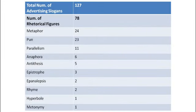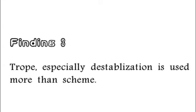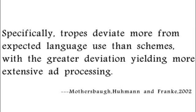Looking at the general data overall and combining with the rhetorical figure classification framework, we can find that generally trope is used more than scheme. In the trope branch, destabilization — especially metaphor and pun — are the most popular rhetorical figures for ad slogans. In the scheme branch, repetition is also popular but not used as much as destabilization. Tropes being more used than schemes is also discussed in former research, because tropes deviate more from expected language use than schemes, and greater deviation yields more extensive ad processing. That is why tropes are usually more used than schemes.